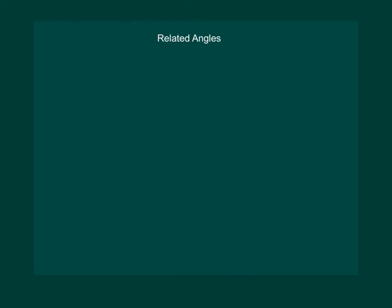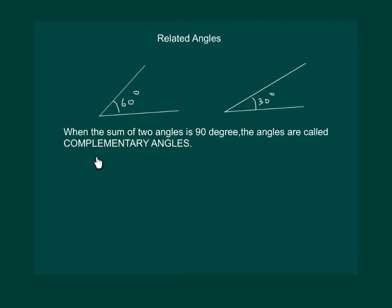Let us now establish a relation between two angles. Consider two angles: one angle of 60 degrees and another angle of 30 degrees. If the sum of two angles is 90 degrees, the angles are called complementary angles. So these two angles are complementary angles.